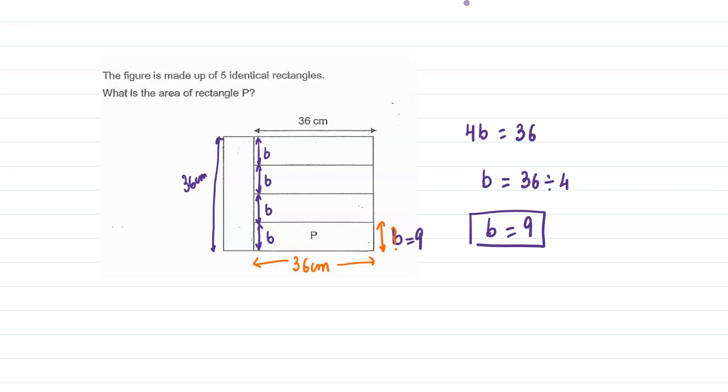Area of P is 36 times 9. So quickly do it: 30 times 9 is 270 and 6 times 9 is 54. We can break the number 36 as 30 and 6, then multiply.